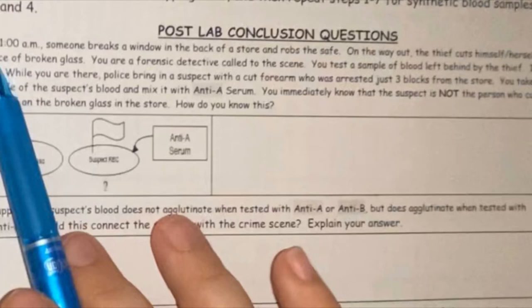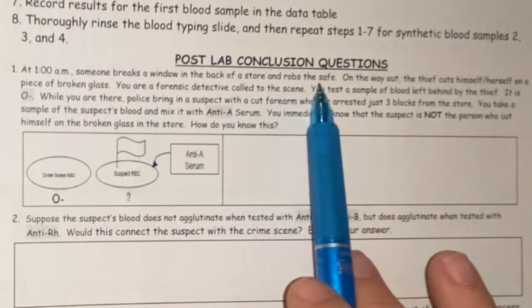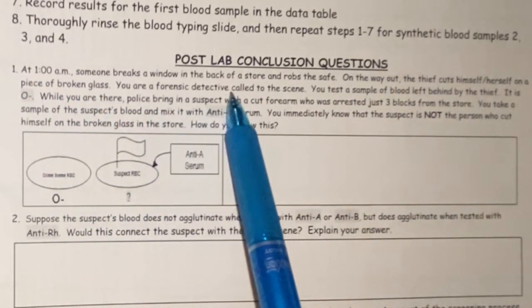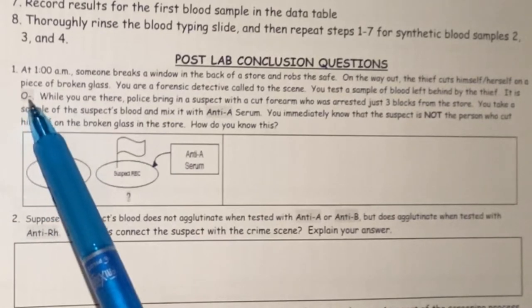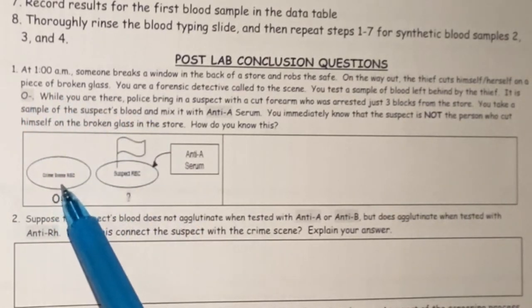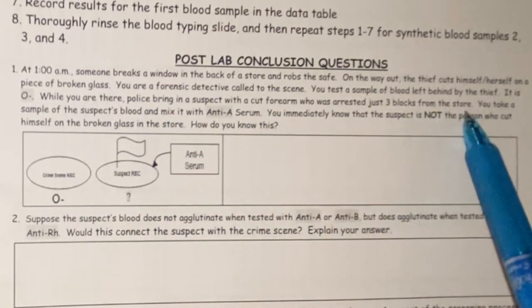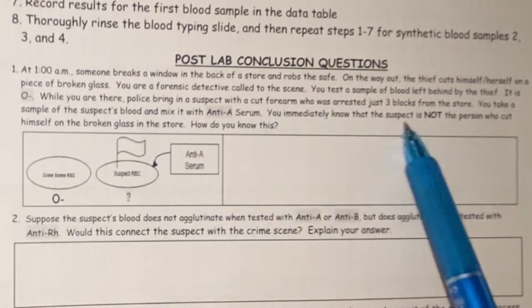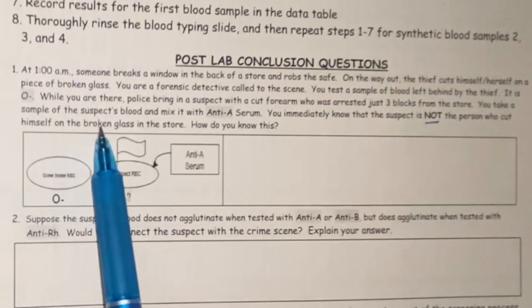Now it's time to answer the post-lab conclusion questions. Question one: at 1 a.m., someone breaks a window and robs a safe. The thief cuts himself on broken glass. You're a forensic detective — you test blood left behind and it's O negative. Police bring in a suspect with a cut forearm; you mix the suspect's blood with anti-A serum and immediately know the suspect is not the person who cut himself on the glass. How do you know this? Pause the video and answer.